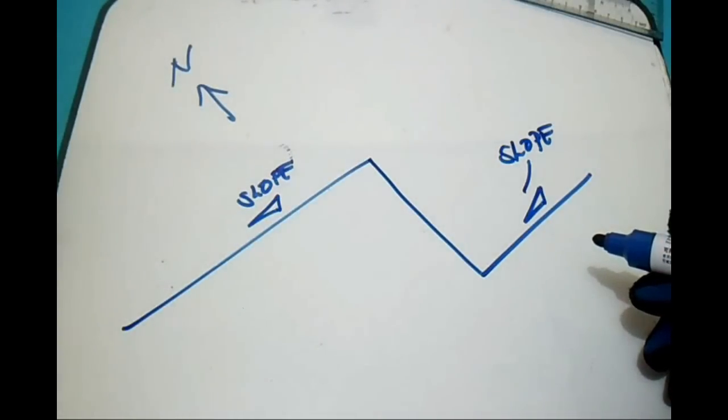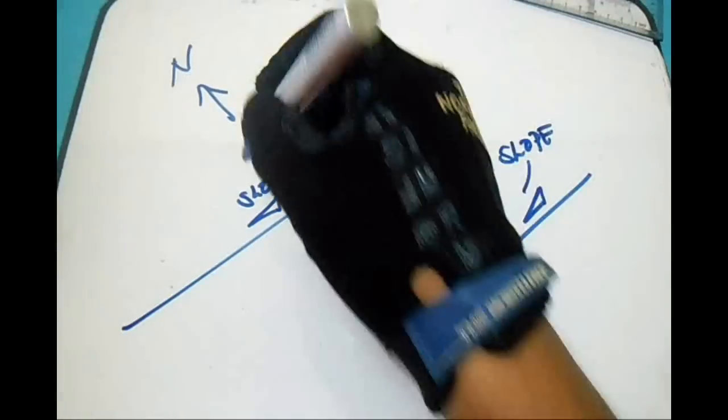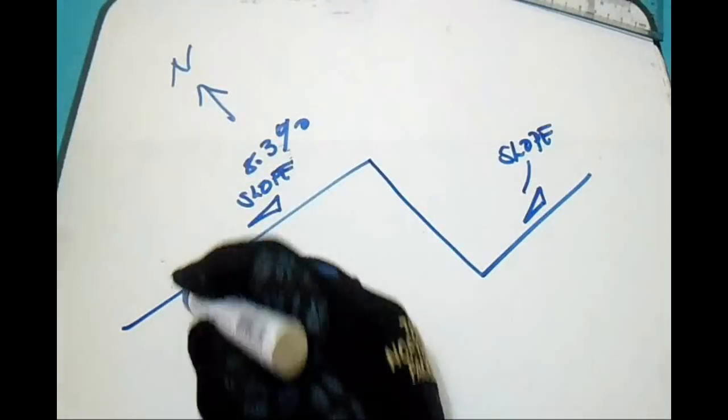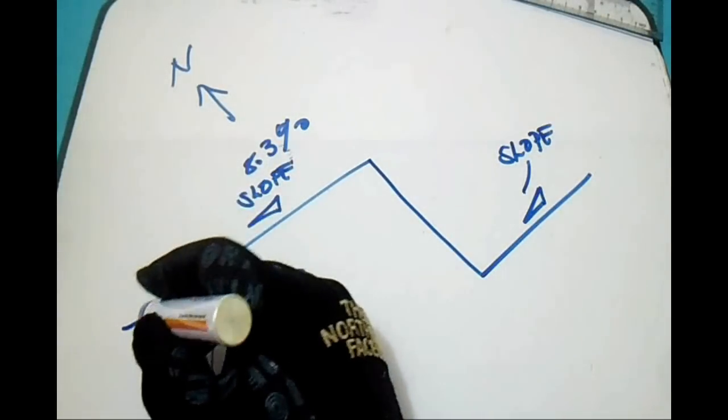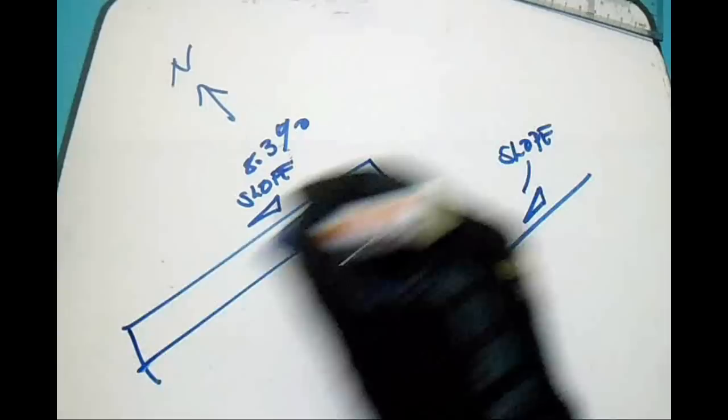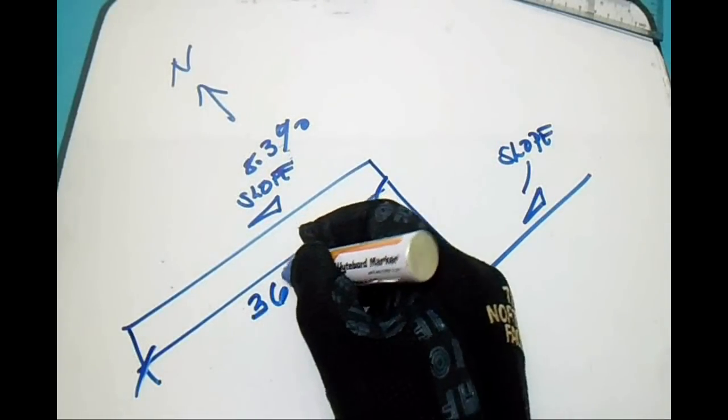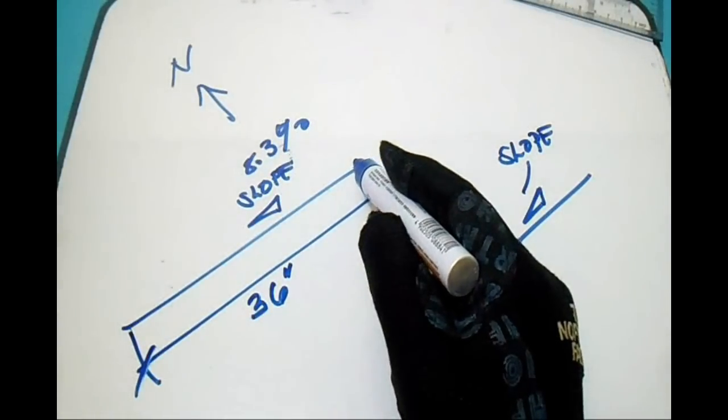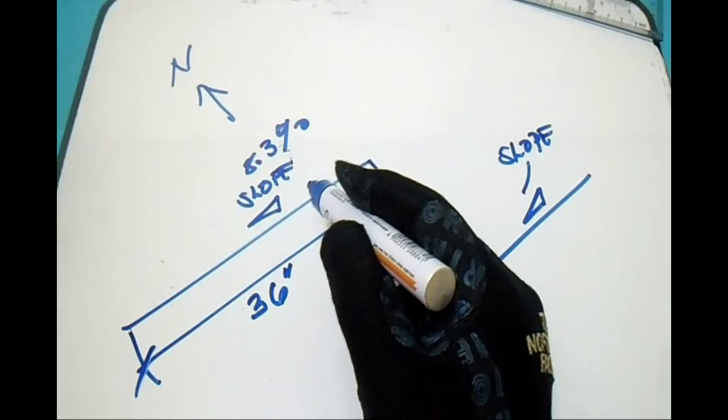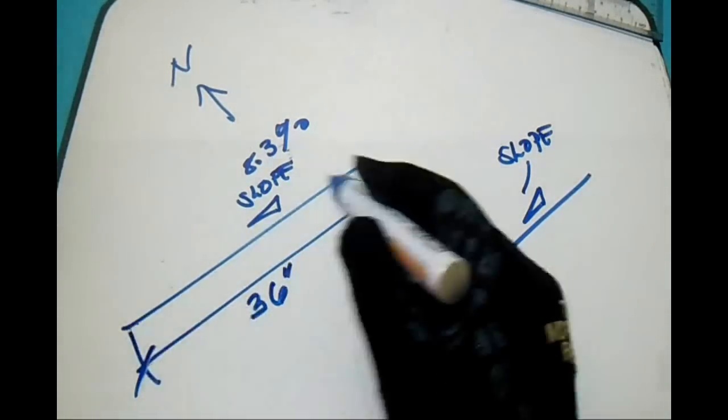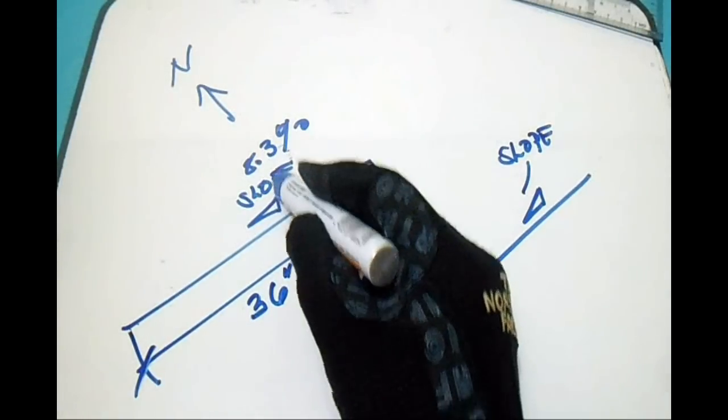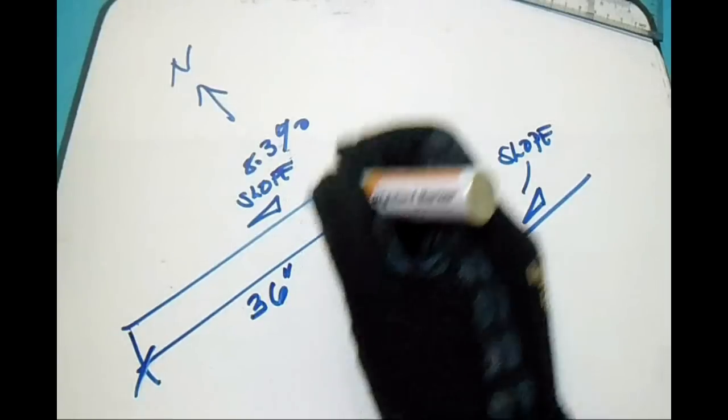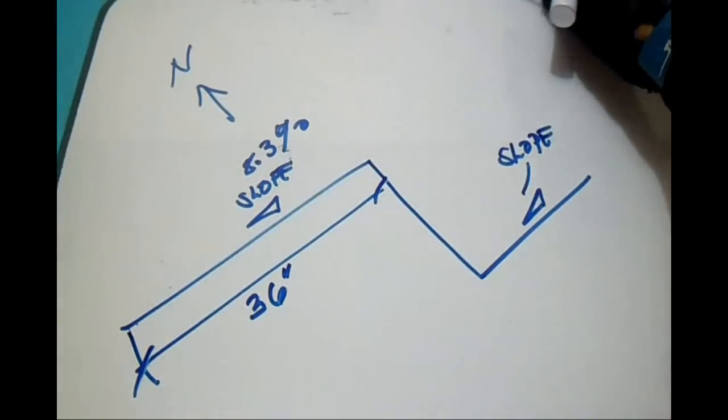How to find the slope if our percentage of slope is 8.3%, and this line length is, for example, 36 inches. How much is the slope of this line? We will find this 8.3% slope in the triangle.